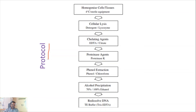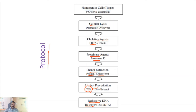Here is a simple protocol: first, homogenize the cells and tissue, followed by cell lysis using EDTA as a chelating agent, then proteinase K treatment. Next, phenol-chloroform extraction using saturated chlorophenol and chloroform solution, followed by alcohol precipitation using 70 percent ethanol. Finally, re-dissolve the DNA in TE buffer.